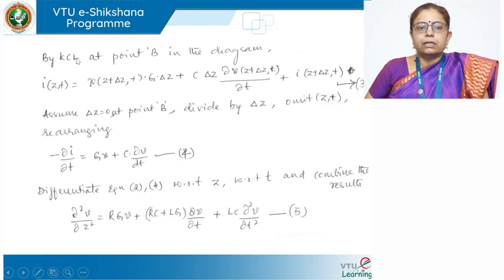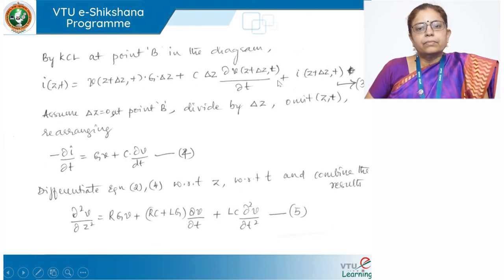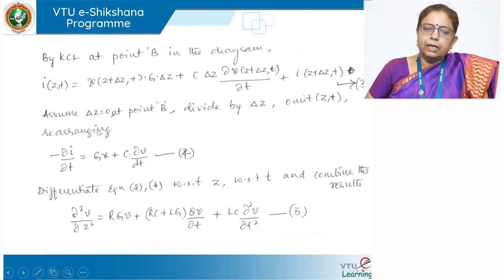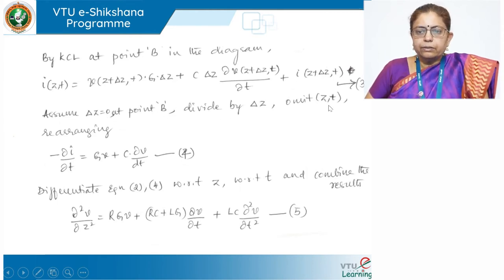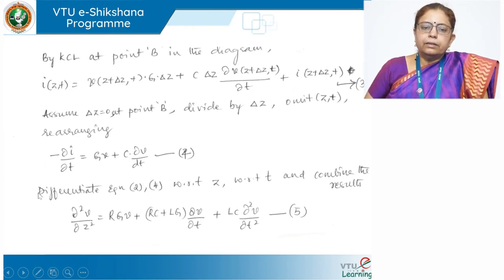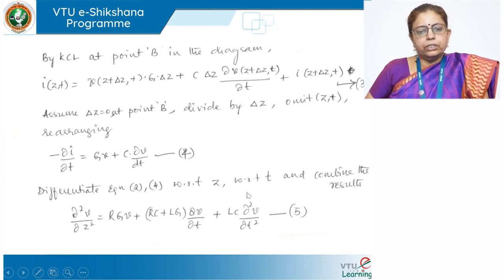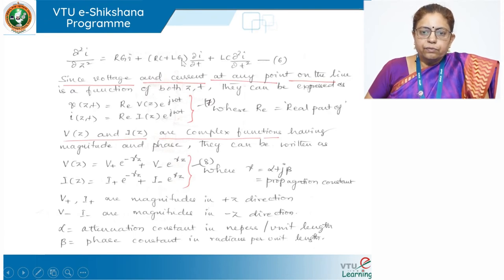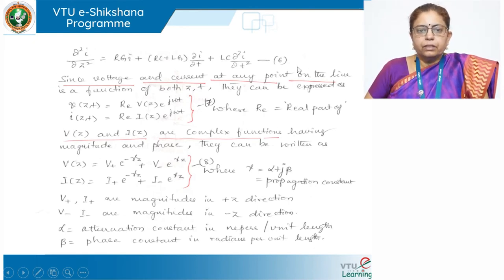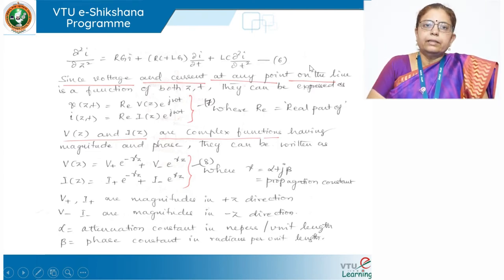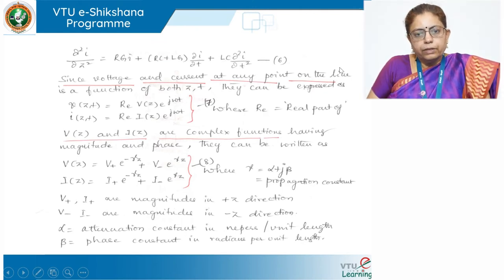Applying KCL — the sum of all currents entering or leaving a junction must be equal — at point B, where delta Z is zero, we divide by delta Z, omit the (z,t) notation, and rearrange to get the current equation. Then differentiating with respect to z again, we get its partial derivative. So we have applied KVL once and KCL once, rearranged terms, and arrived at two differential equations — the partial derivatives for voltage and current.